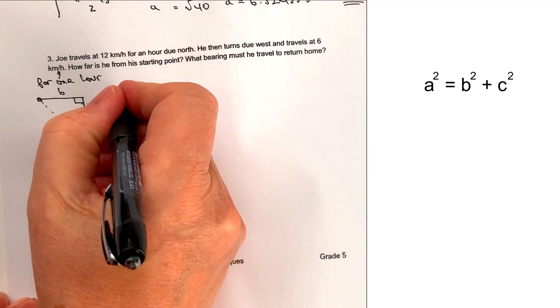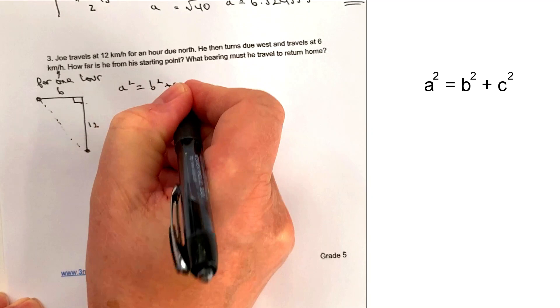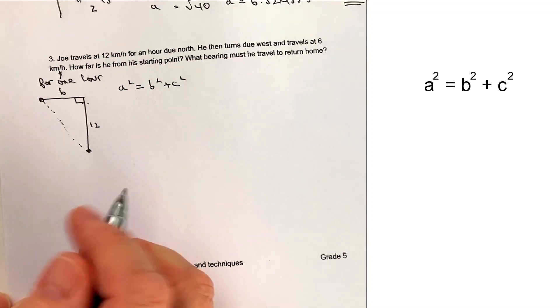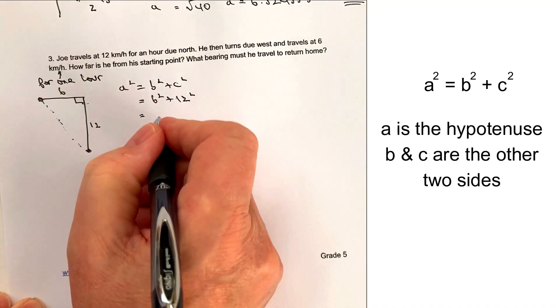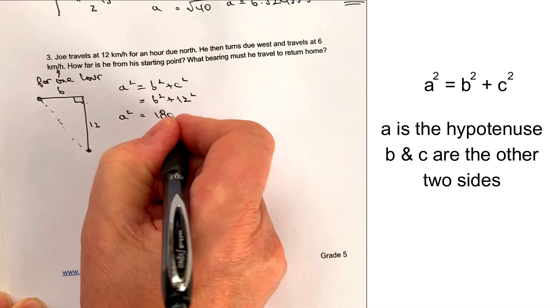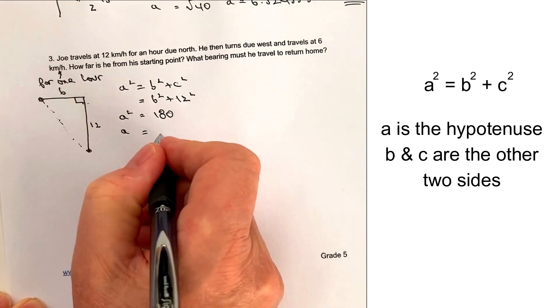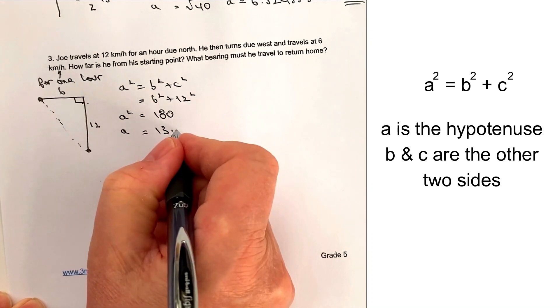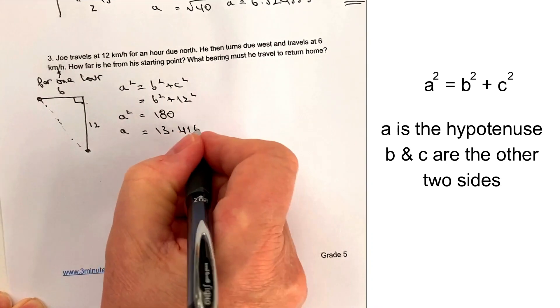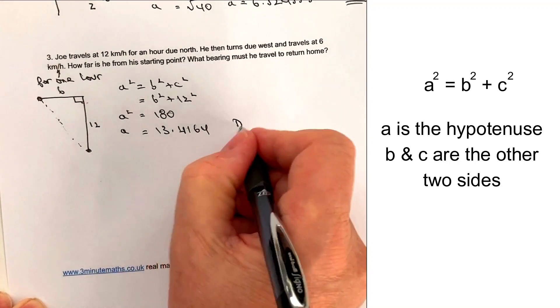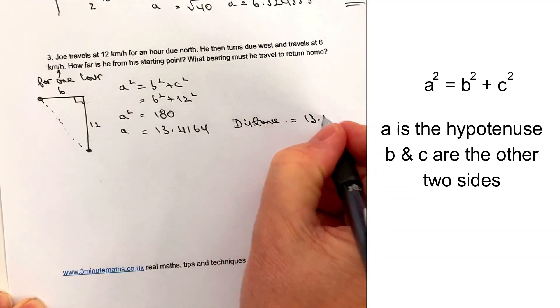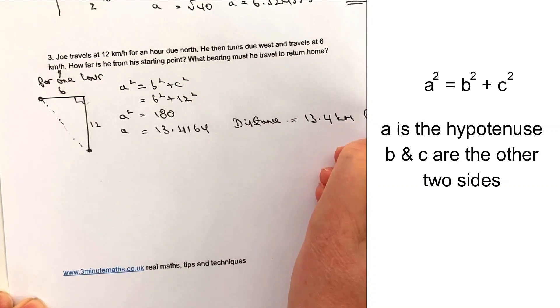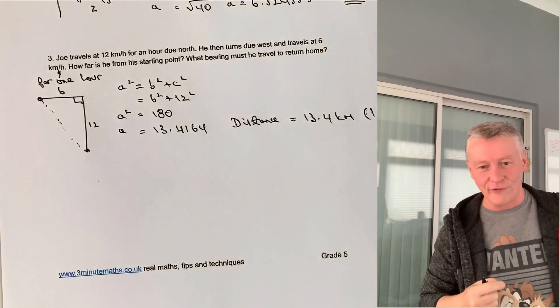Using A squared equals B squared plus C squared, the hypotenuse A squared is the long line — the answer to the question. B squared is 6 squared plus 12 squared, giving A squared equals 180. Therefore A equals the square root of 180, which is 13.4164. So the distance from the starting point is equal to 13.4 kilometres to one decimal place.